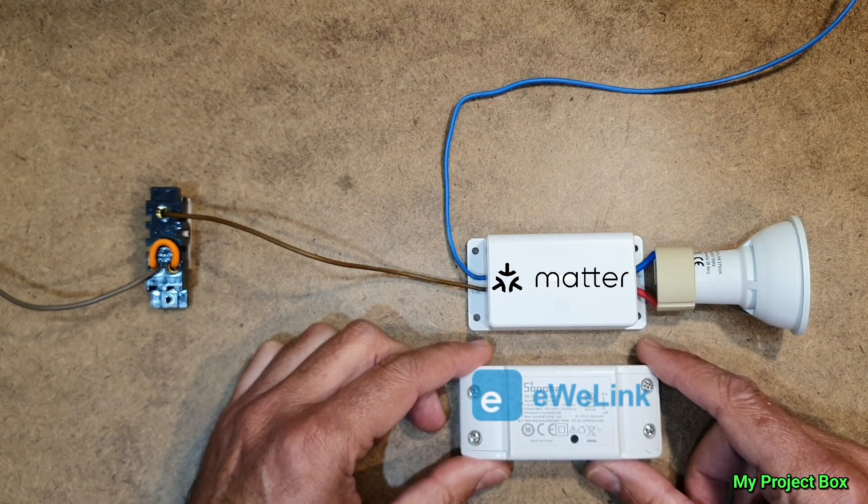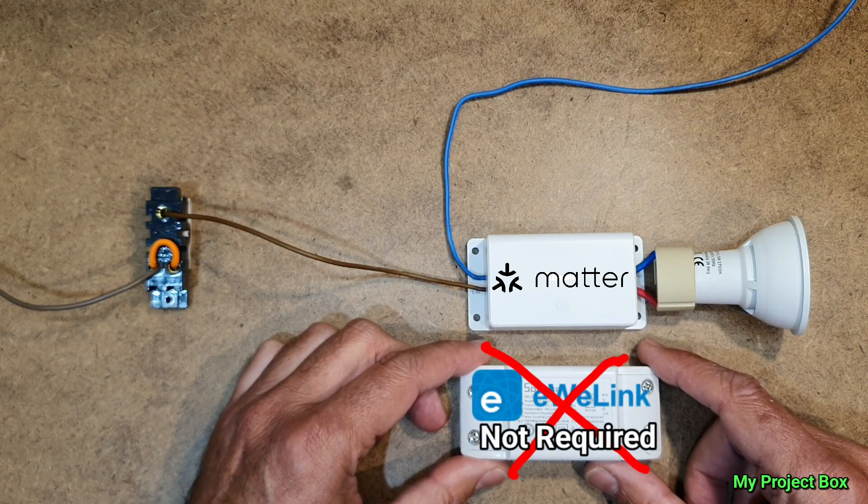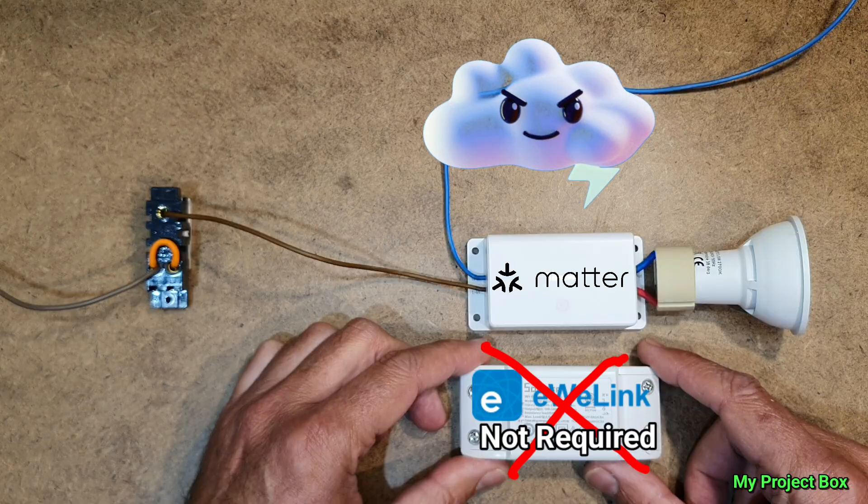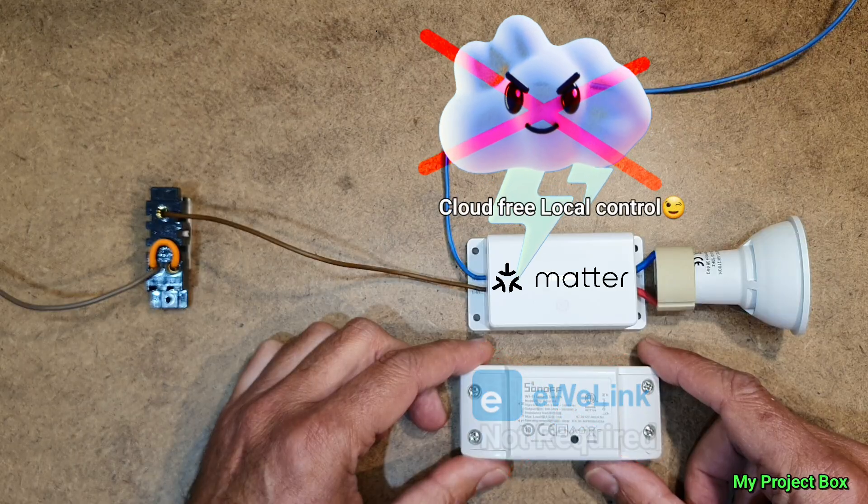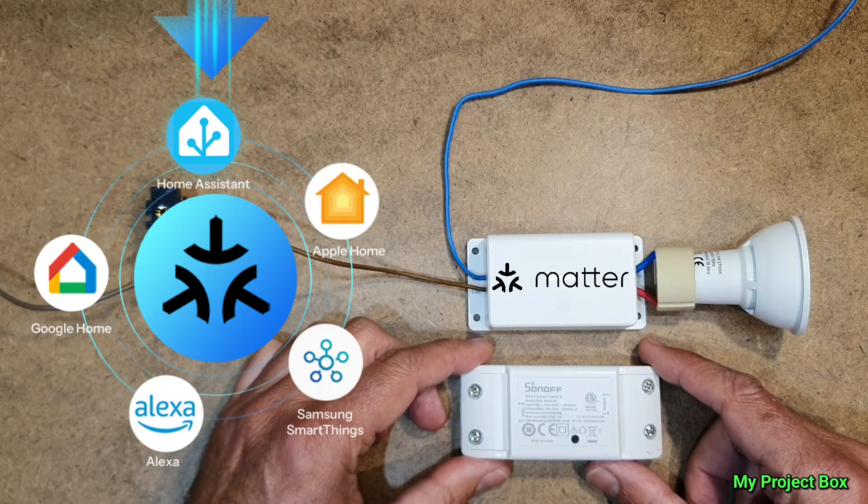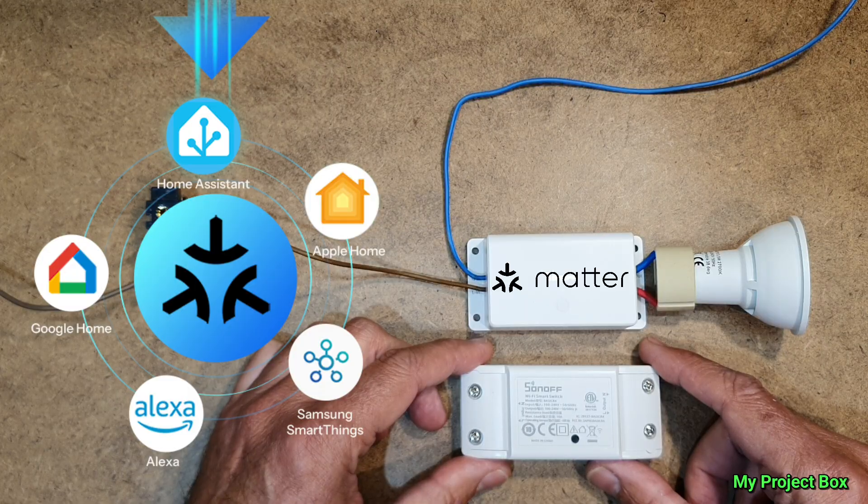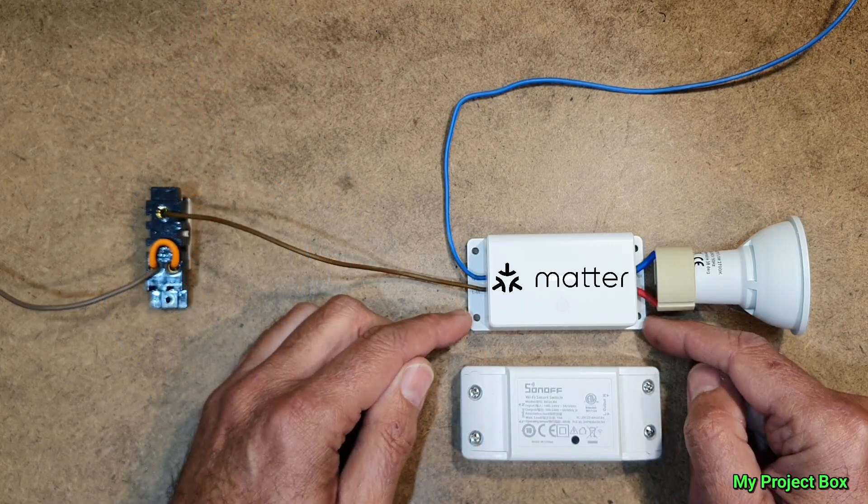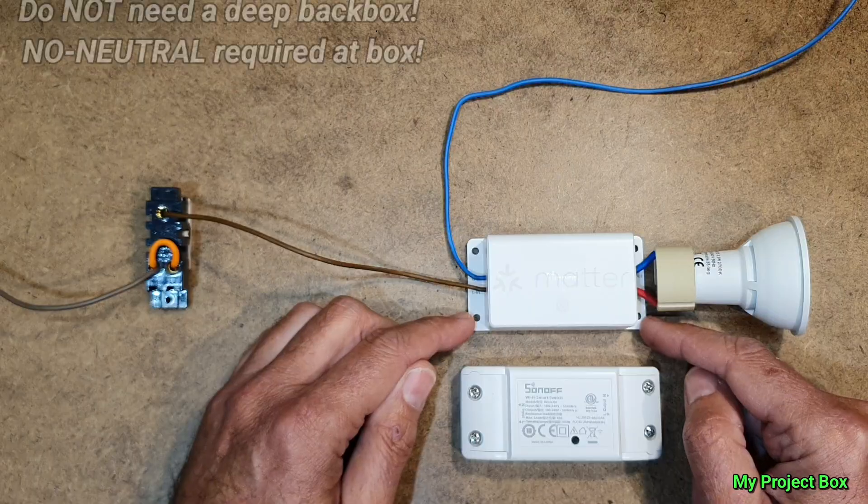What that means is you no longer need eWeLink if you don't want to. You can run it cloud-free and locally, and connect it to pretty much anything because Matter is compatible with pretty much everything. I'm quite excited about the fact that this is Matter compatible.